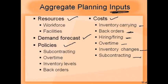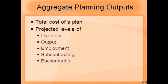Aggregate planning outputs generally include a total cost plan — what is the total cost for the next two months or one year based on the plan — and projected levels of inventory, output, how many people will be needed for employment, what percentage of units will be subcontracted, and back-order quantities. All those data points will be output from this planning.